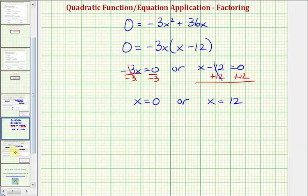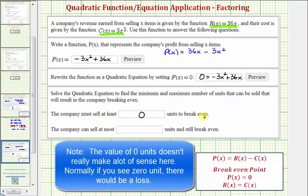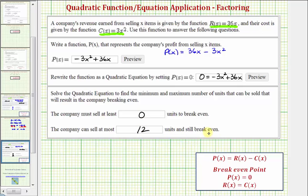So going back to the question, the company must sell at least zero units to break even, and the company can sell at most 12 units and still break even. So hopefully the company will sell somewhere between zero and 12 units to make some profit. I hope this was helpful.